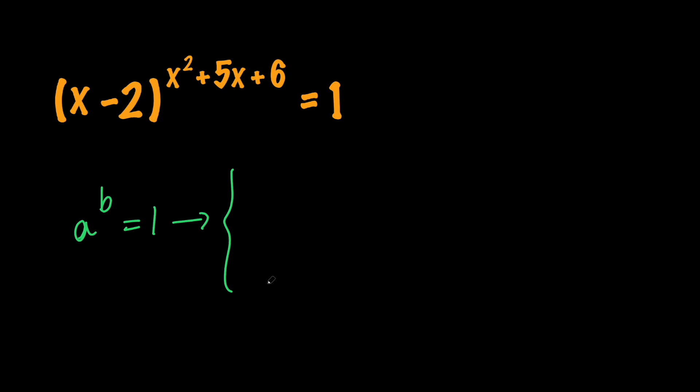So one case is that a equals 1 and b can be any real number because 1 to the power of anything gives us 1.